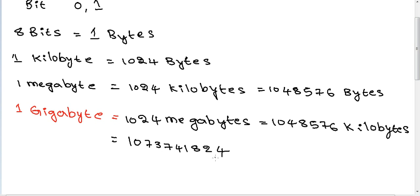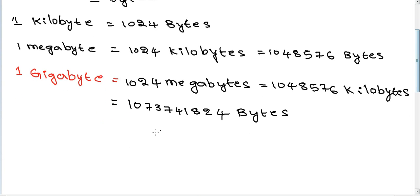One gigabyte equals 1,073,741,824 bytes. Next, one terabyte equals 1024 gigabytes.